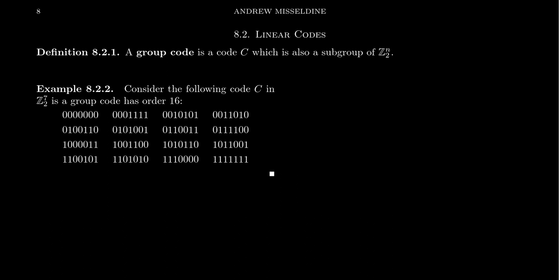So this is going to be an example of a group code. Just so we connect it with what we saw before, these are binary sequences of 7 bits, so the first parameter here is 7. How big is this thing? Of course, 16 is 2 to the 4th, so this is an example of a 7,4 group code, and we'll talk about the importance of it being a group in just a second.